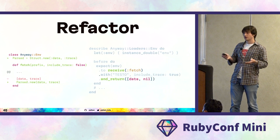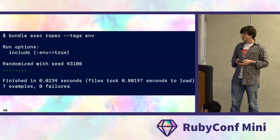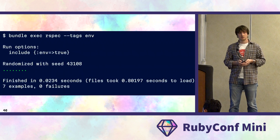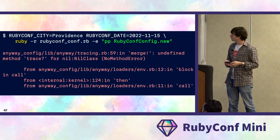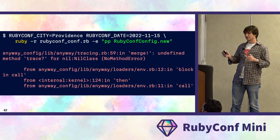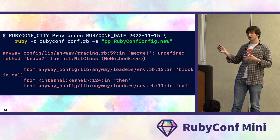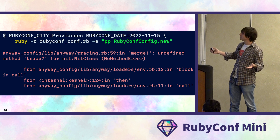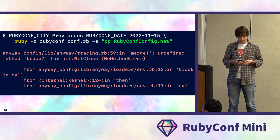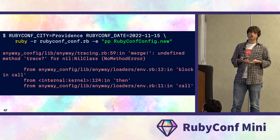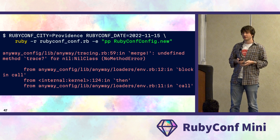Unfortunately, we cannot guarantee this with existing tools. Let's demonstrate that with another refactoring. Previously, we returned an array of two values from our fetch method — not a great idea. Let's wrap it into a data value object, a struct with two fields: data and trace. As before, our stub stayed the same. Our tests pass, but our code doesn't work — and the error is cryptic: undefined for NilClass.